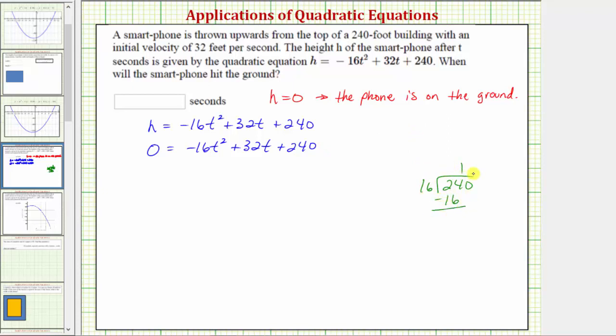There's one 16 in 24. One times 16 is 16. Subtract. The difference is eight. Bring down the zero. There are five 16's in 80. Five times 16 is 80 with the remainder of zero.